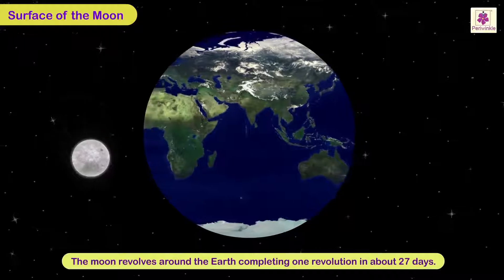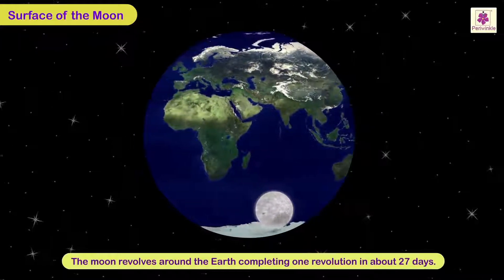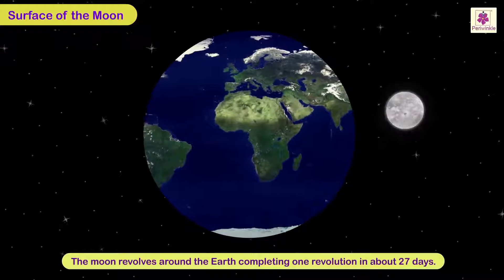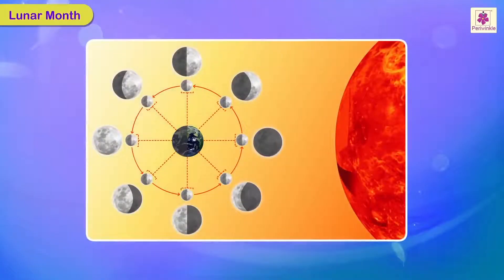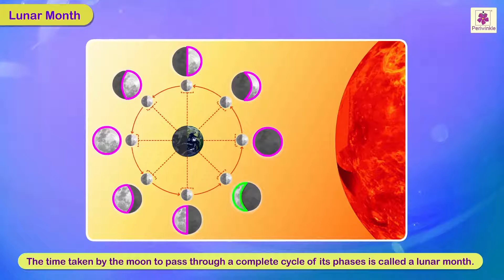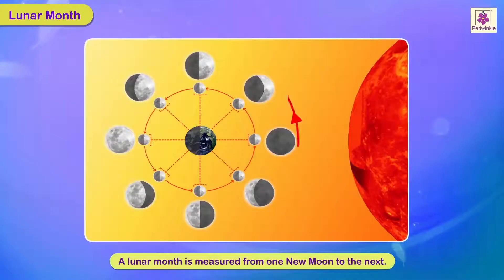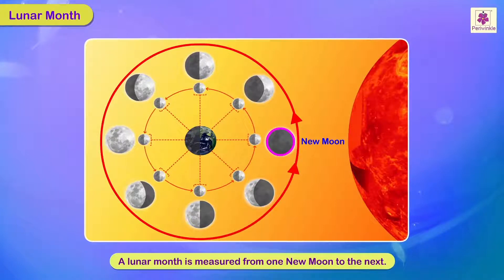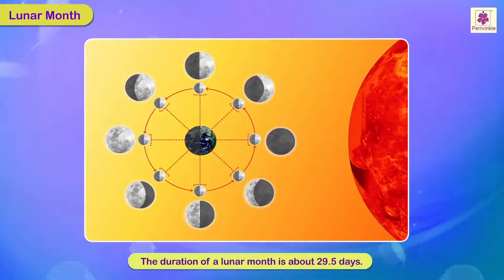The Moon revolves around the Earth, completing one revolution in about 27 days. The time taken by the Moon to pass through a complete cycle of its phases is called a Lunar Month. A Lunar Month is measured from one new moon to the next, and its duration is about 29.5 days.